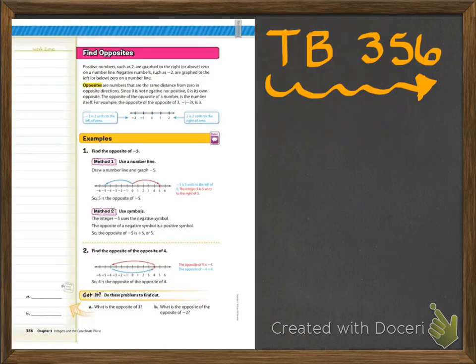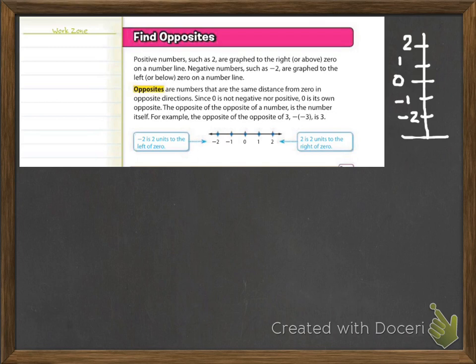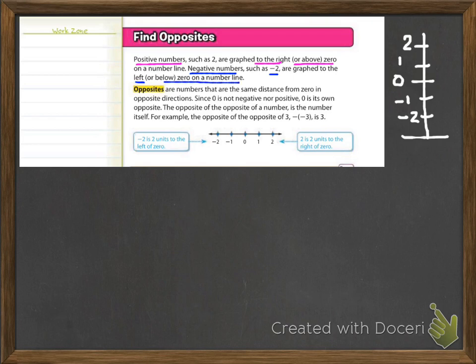Now on textbook page 356, it says 'Find Opposites.' Positive numbers, such as two, are graphed to the right or above zero on a number line — and 'above' refers to vertical number lines. Negative numbers, such as negative two, are graphed to the left or below zero. Opposites are numbers that are the same distance from zero in opposite directions. Since zero is neither negative nor positive, zero is its own opposite. The opposite of the opposite of a number is the number itself.